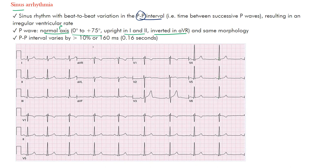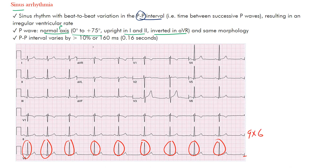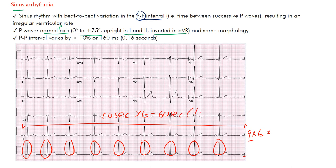To calculate the ventricular rate, count the complexes: one, two, three, four, five, six, seven, eight, nine — almost a tenth — so about nine complexes. We counted over six seconds, and since beginning to end is 10 seconds, we multiply by six to get 60 seconds. Nine times six is 54 beats per minute.